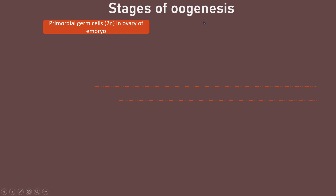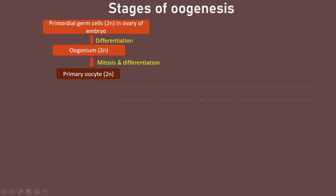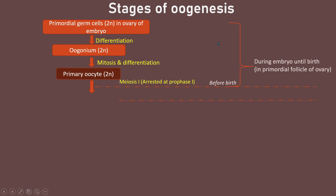The first stage of oogenesis already occurs during the embryonic stage — one of the stages of fetal development in the mother's womb during pregnancy. In the ovary of the embryo, many primordial germ cells, which are diploid, undergo differentiation to form oogonia. The oogonia undergo mitosis and differentiation to form primary oocytes, also diploid cells. The primary oocyte begins meiosis I but is arrested at prophase I. This development occurs before birth, inside the primordial follicles of the ovary.